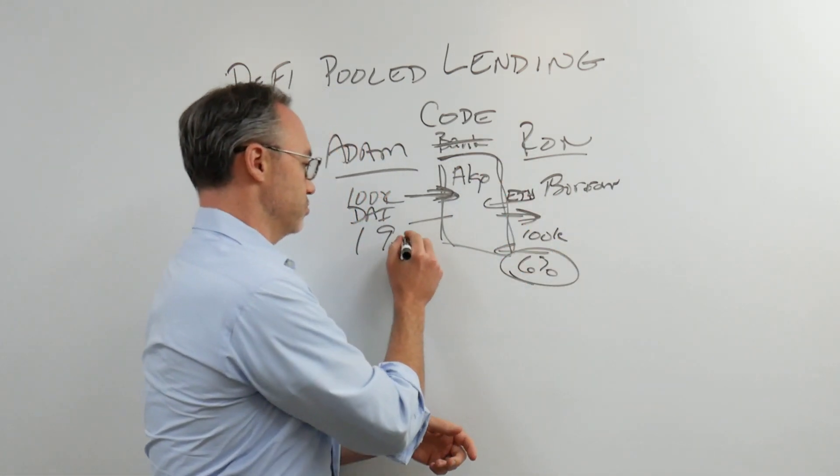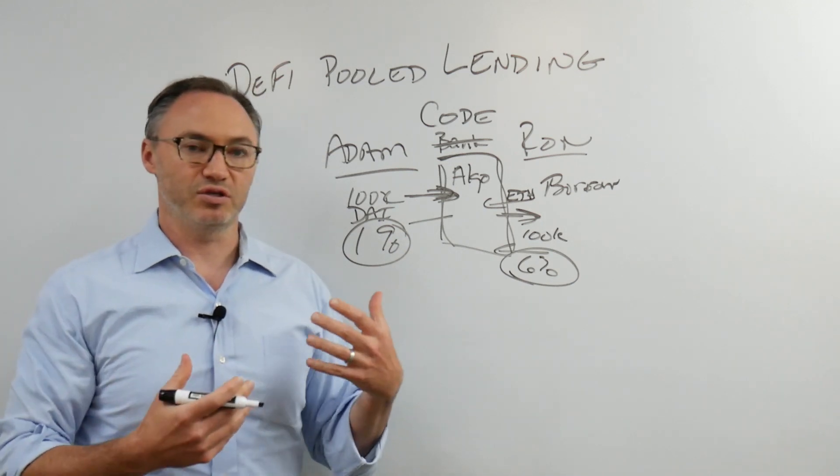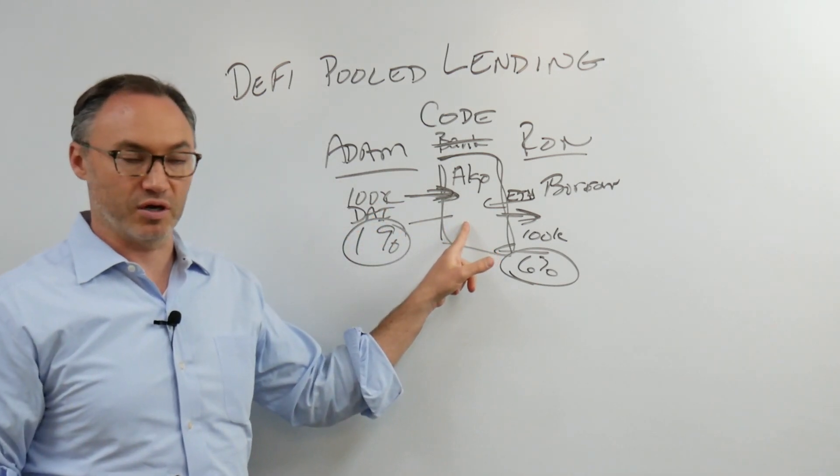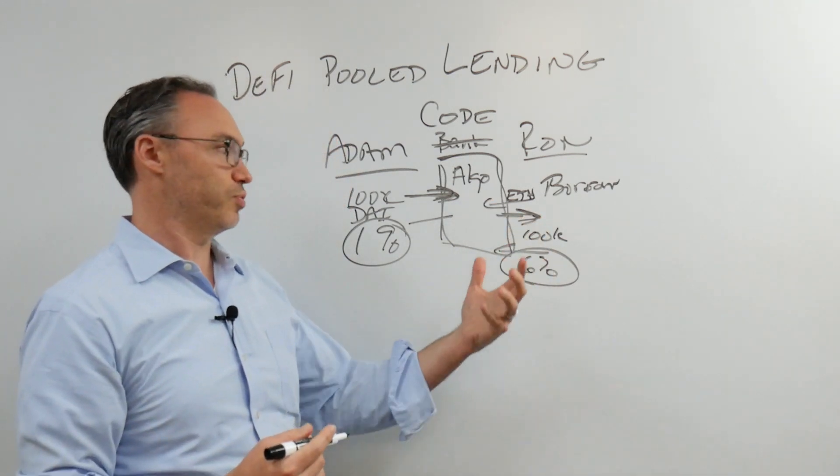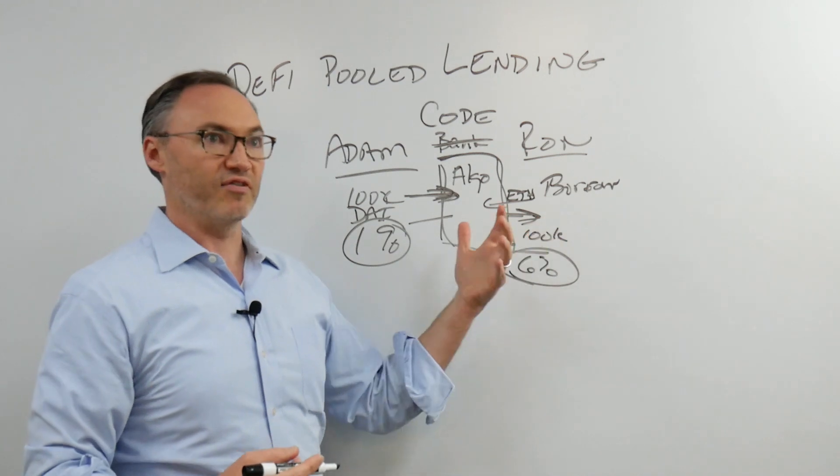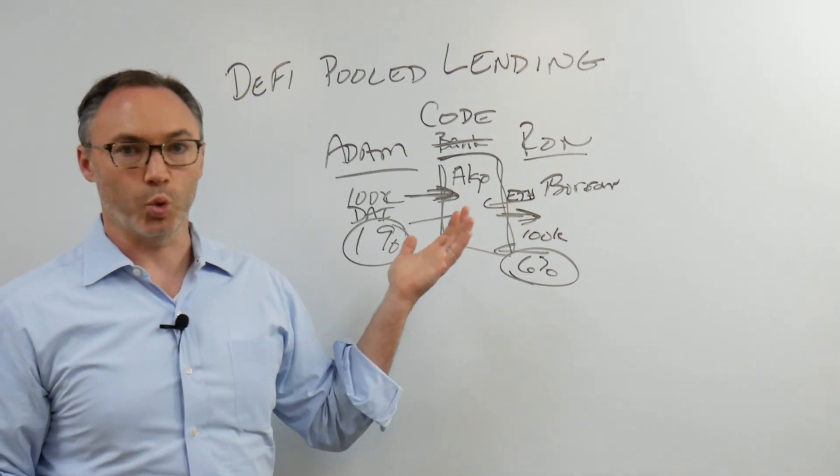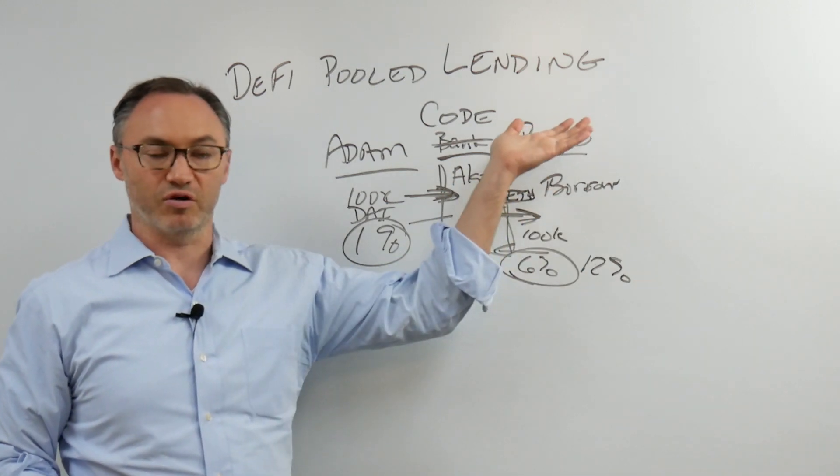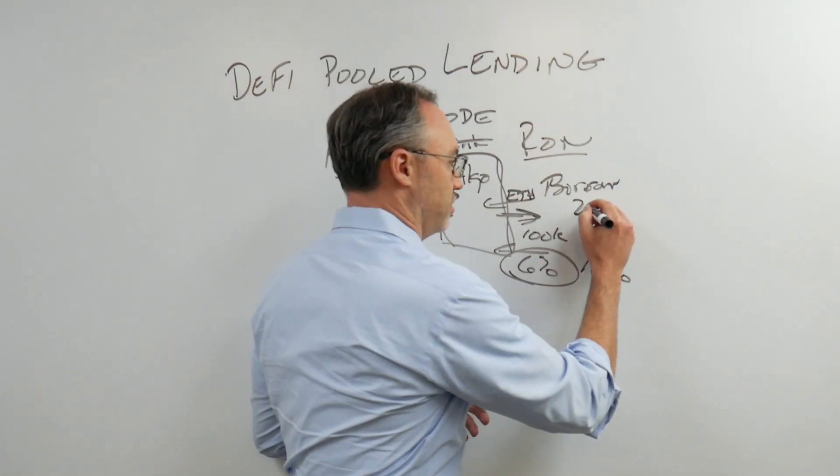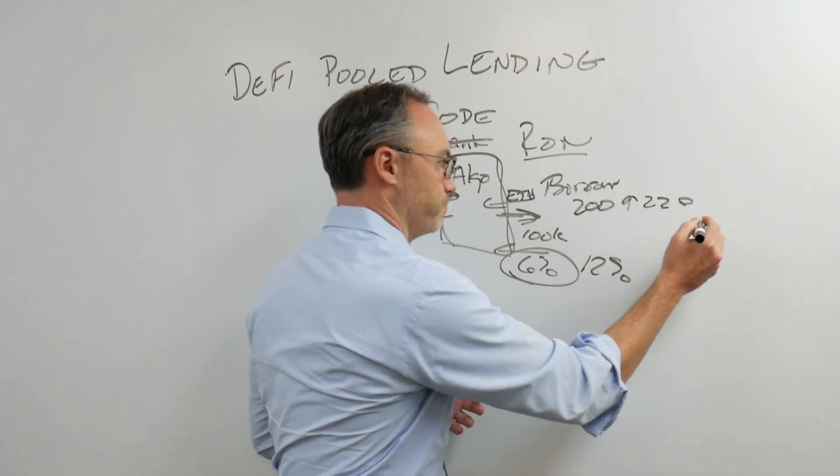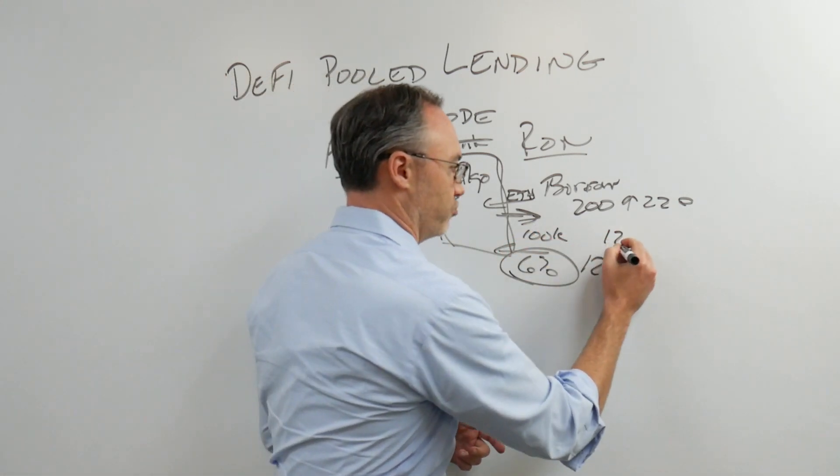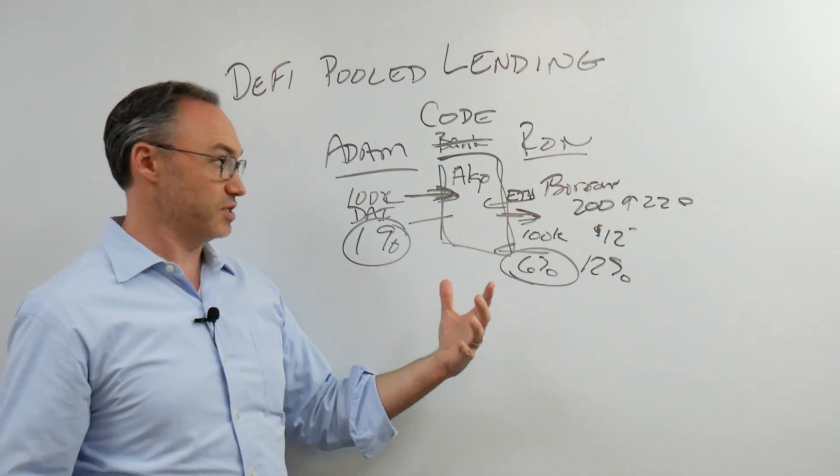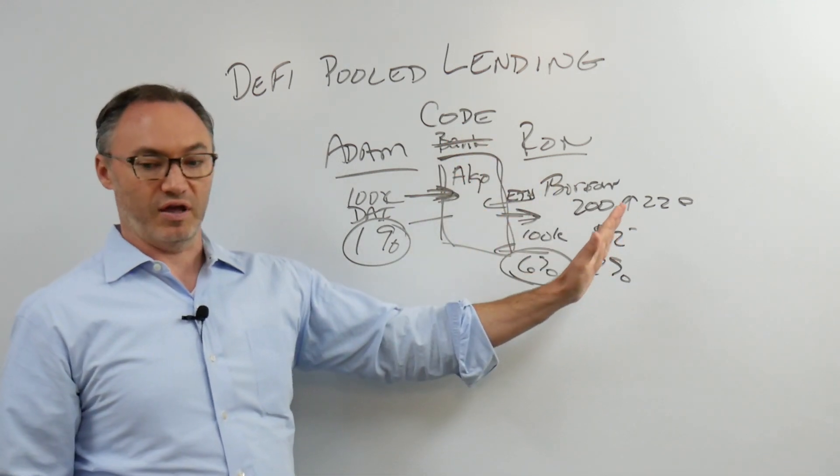So this algorithm is always adjusting this interest rate and this interest rate because it's having to create incentives on both sides. It's got to give me the incentive to put my money into the protocol to lock it in this smart contract. And it's got to give Ron the incentive to actually borrow, to put up his ETH as collateral and borrow money. If Ron thinks ETH is going to go up in value by 20%, he's probably willing to pay 6% or even 12% to borrow money because he thinks ETH is going to go up 20%.